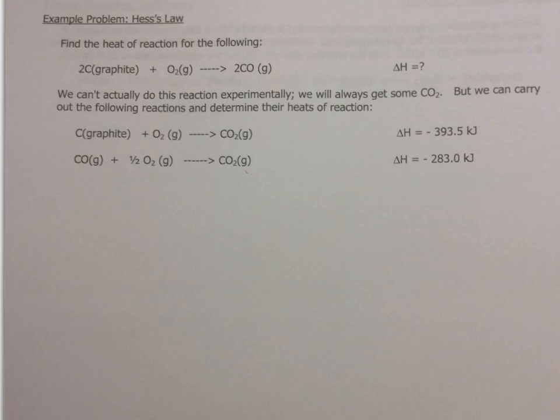Carbon plus oxygen gives me carbon dioxide. The delta H is negative 393.5 kilojoules. And carbon monoxide plus half a mole of oxygen gives me CO2. And the delta H is negative 283.0 kilojoules. Now I know in most balanced equations, we don't use fractions. But when we are doing thermochemical equations, we are allowed to use fractions. So the first thing I need to do is figure out that I need two carbons or two graphites. So I'm going to have to multiply the whole first equation and the delta H by two.